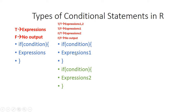In the second type of conditional statements we have two independent if statements which execute their expressions independent of one another. If both conditions are true then both expressions will be executed. If the first condition is true and the second is false, only the first expressions will be executed. If both conditions are false there will be no output.